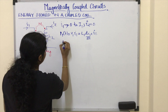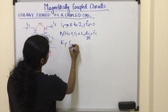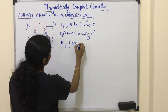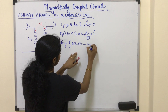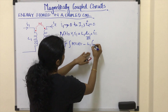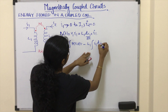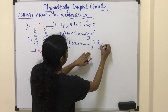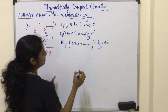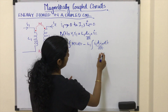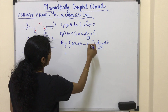So energy in coil 1 is given by the integral of power — the integral of power gives energy. L1 is constant, so taking it out: L1 times integral of I1·(dI1/dt)·dt. Here the differentiation and integration cancel each other.